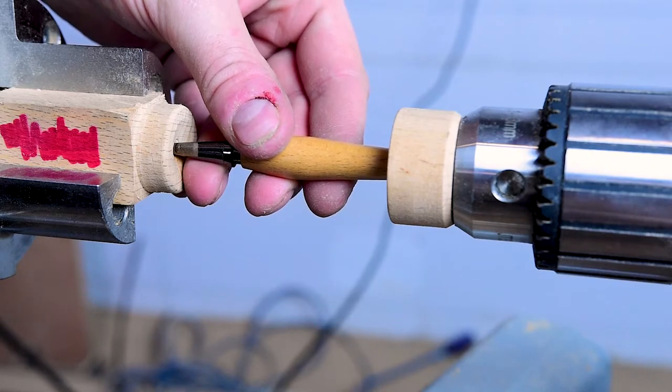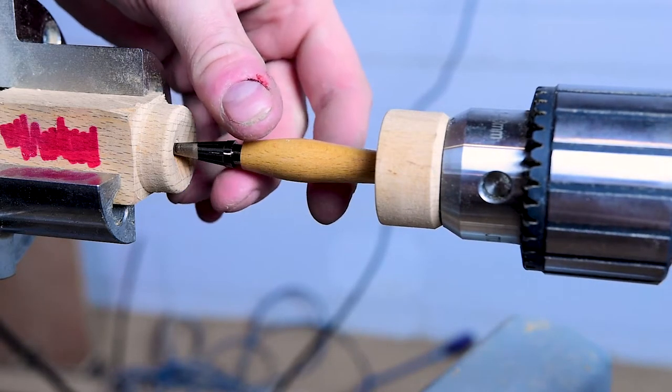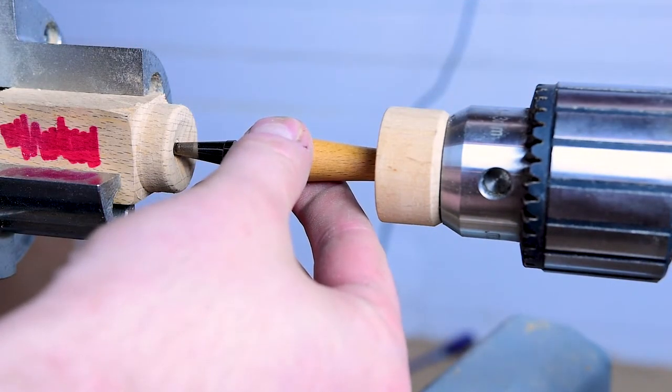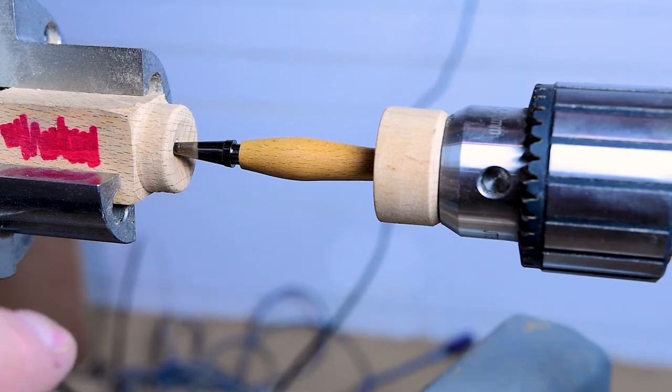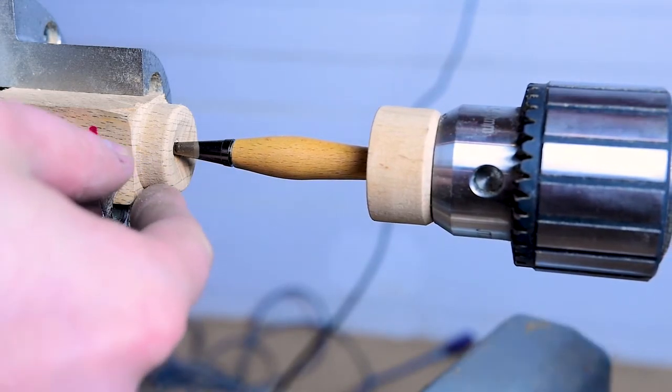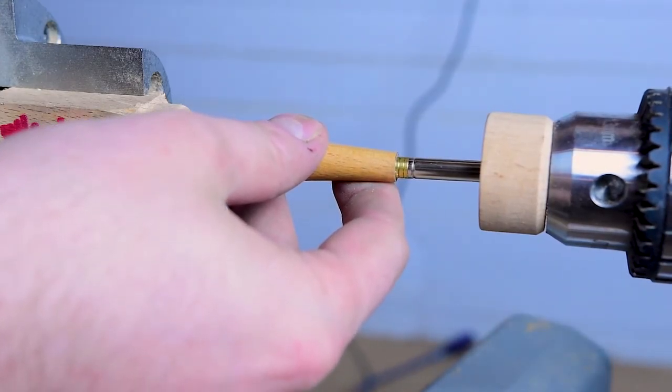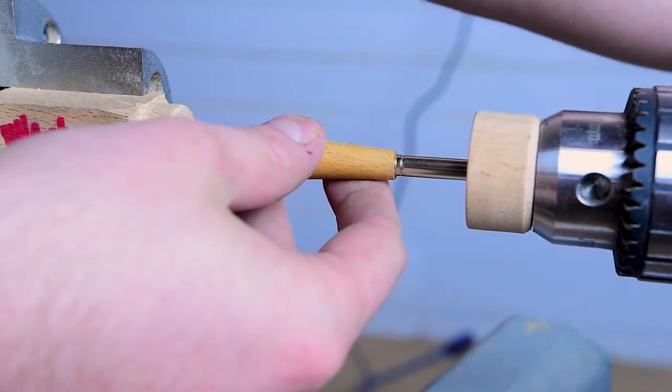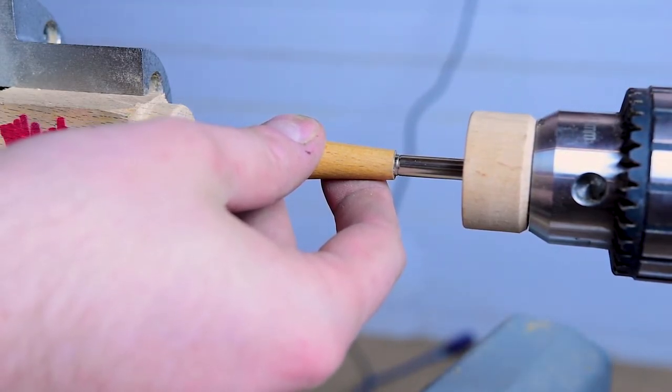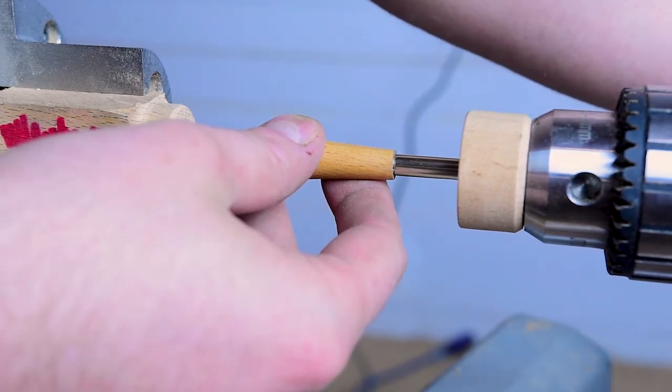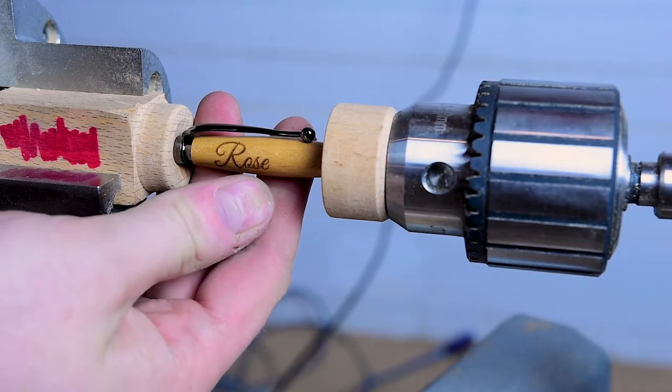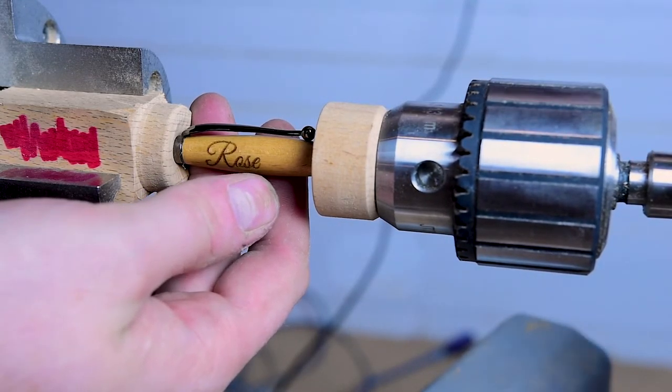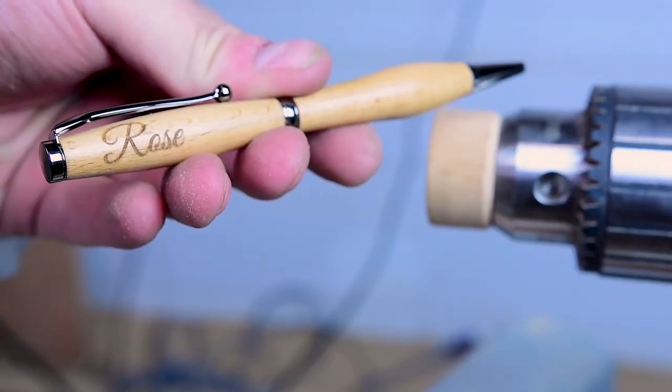Now we get to press the pen together. So this is a pen press which I made in a previous video. You'll be able to find that in the description. It's very easy to make, very simple and very effective at putting together a pen. There we go, that's our pen finished.